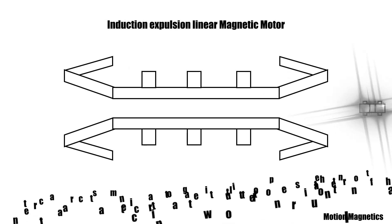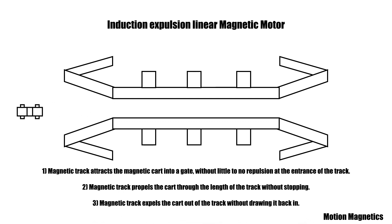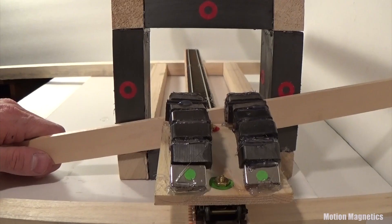The induction expulsion linear magnetic motor. One: the magnetic track attracts the magnetic cart into a gate with little or no repulsion at the entrance of the track. Number two: the magnetic track propels the cart through the length of the track without stopping. Three: the magnetic track expels the cart out of the track without drawing it back in.